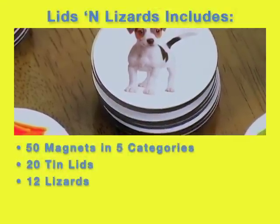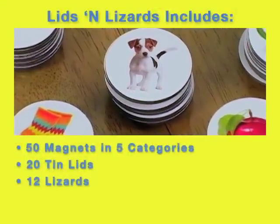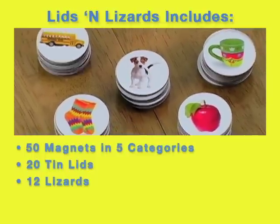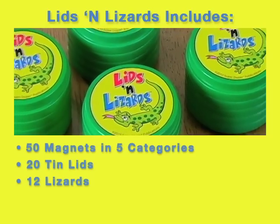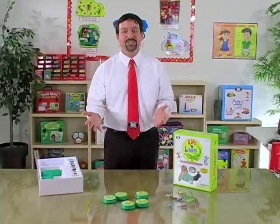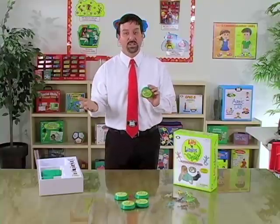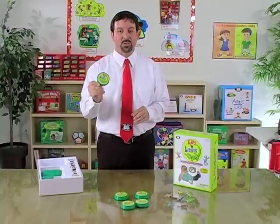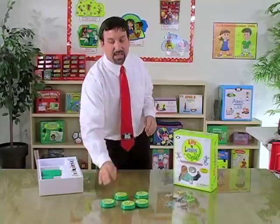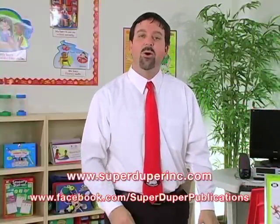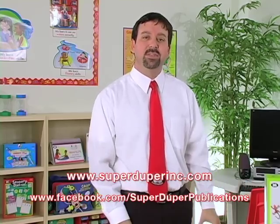Lids and Lizards is a magnetic photo vocabulary game that includes 50 magnets from five categories: animals, around the home, clothing, food, and transportation. You also get 20 lids and 12 lizards. Lids and Lizards is a fun, interactive way to target language skills, articulation skills, and even auditory and visual memory skills when working with students. You can also use the lids from the Lids and Lizards game with our SuperDuper Magnet Talk games that target articulation, phonology, and language. If you'd like to learn more, please visit us at superduperinc.com or visit our Facebook page and share your ideas on how you could use Lids and Lizards in your therapy.